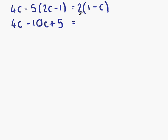On the other side we have 2 times in the bracket. So first of all, 2 times 1 is 2. 2 times minus c is minus 2c.